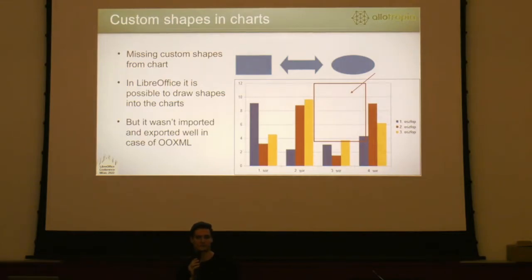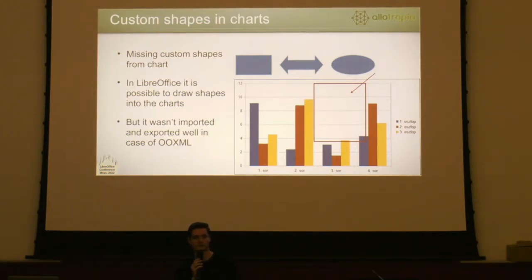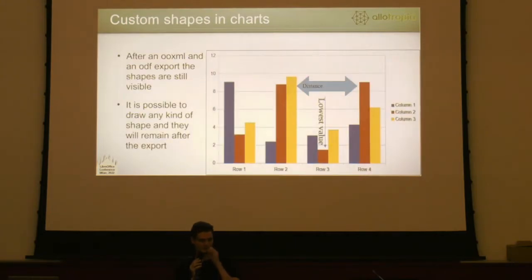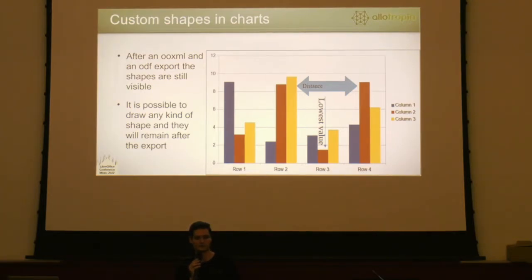On this slide, there are custom shapes inside the chart objects. It is possible to draw different kinds of shapes into the charts, like on the top of the slide. But the problem was that we didn't import and export them to OXML. The image was created before the implementation, and there should be shapes inside the charts. After the fix and implementation, all kinds of shapes can be imported and exported inside the chart as well, in all kinds of file formats. There were also issues around the ODS import and export, but that also works now.